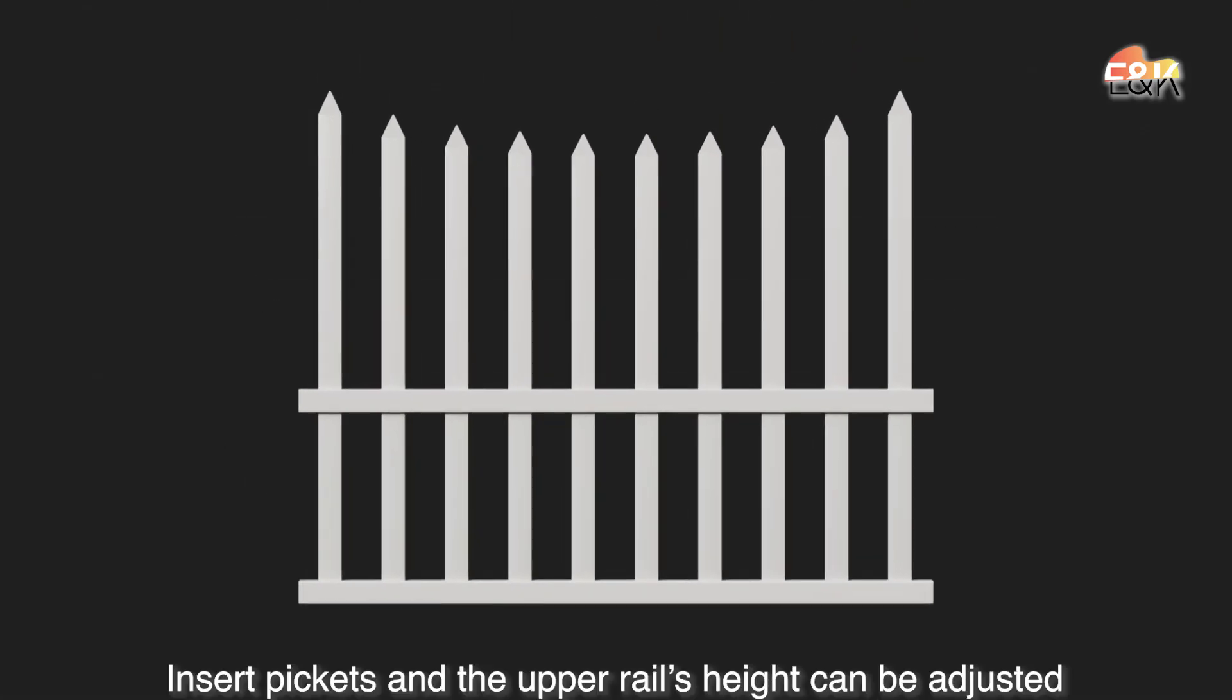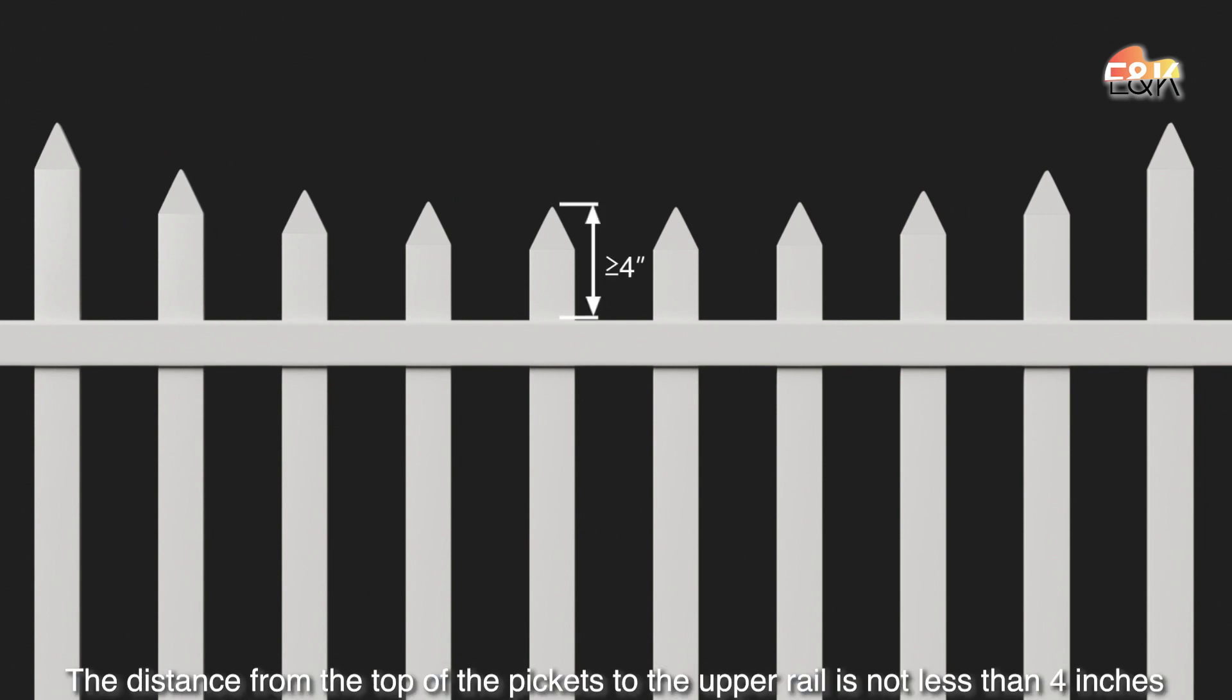Insert pickets and the upper rail's height can be adjusted. The distance from the top of the pickets to the upper rail is not less than 4 inches.